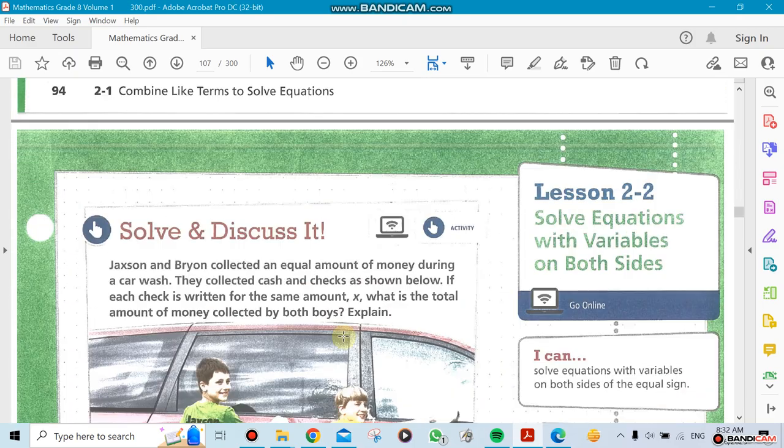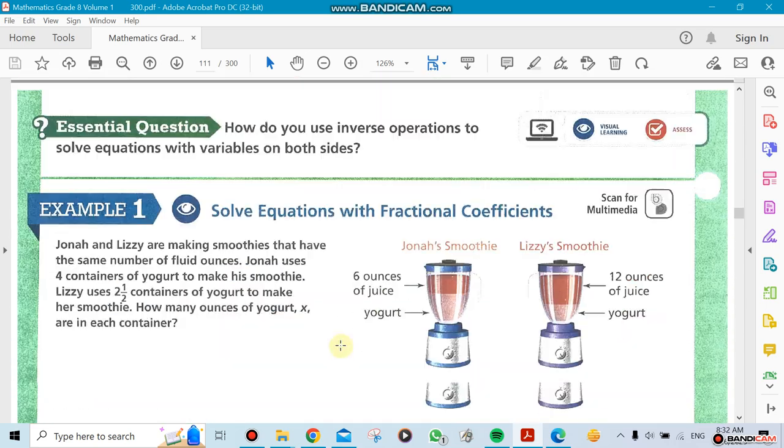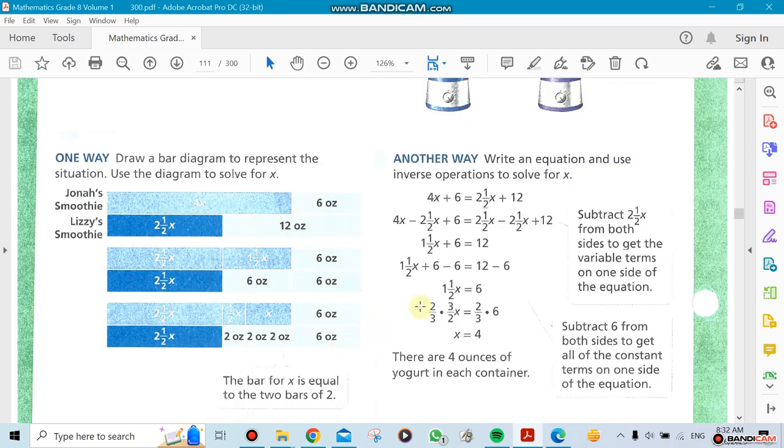The next section is going to be solving equations with variables on both sides. Now remember, the one for 2.1, the variable was on the left side for example. It doesn't make a difference right or left, but now we're going to have the variable on both sides of the equation. So I'll show you an example here. That's one of the examples. So you can see there's an x here and you see there's an x on the other side.